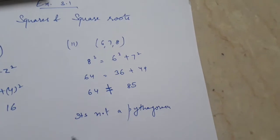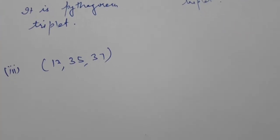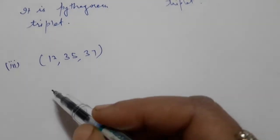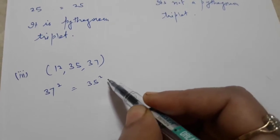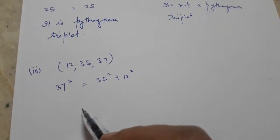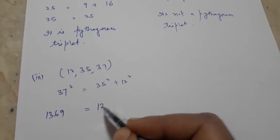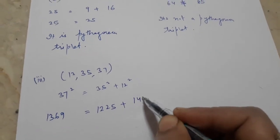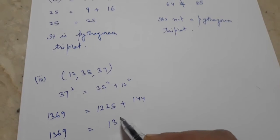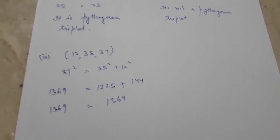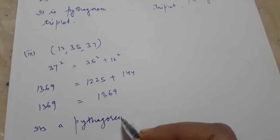In the third option, the numbers 12, 35, and 37 have been given. The biggest number is 37, so 37² should equal 35² + 12². 37² = 1369, 35² = 1225, and 12² = 144. The addition of 1225 and 144 equals 1369. Since LHS equals RHS, we can say it's a Pythagorean triplet.